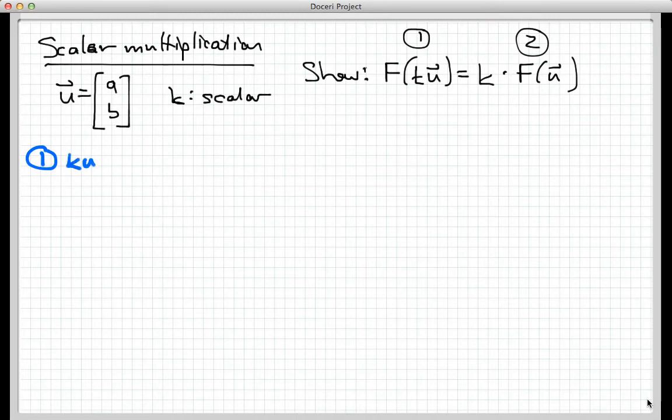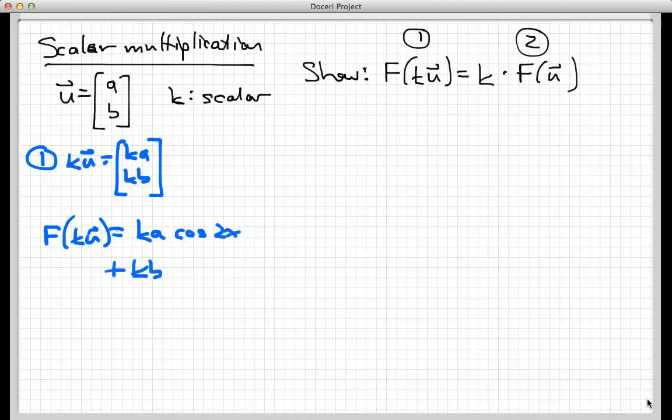Here's stage one. First, what is k·U, the thing I'm plugging into F? That would simply be the vector [ka, kb]. Now if I put that into F, F(k·U) would be ka·cos(2x) + kb·sin(2x). That's the end of part one.